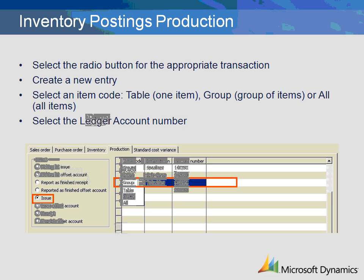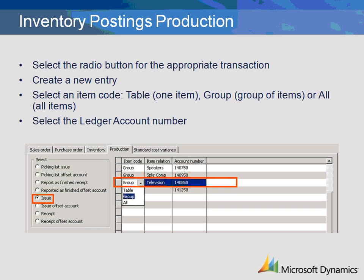The use of table, group, and all can be used together within each transaction category, meaning that you can have some of the setup for issues by table, some by group, and some by all. This allows you to use a concept of setup by exception. Microsoft Dynamics AX will search at the lowest level, starting at the item, then group, then all, for the ledger mapping until it finds the correct match for the item being posted.